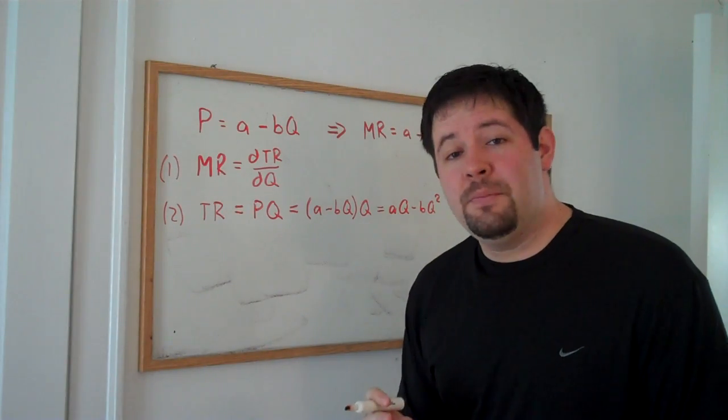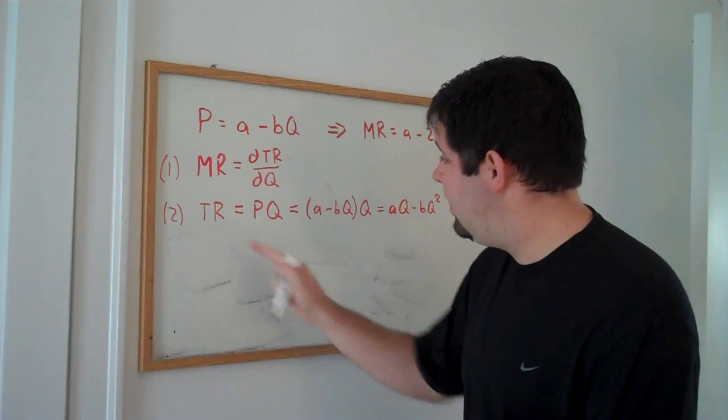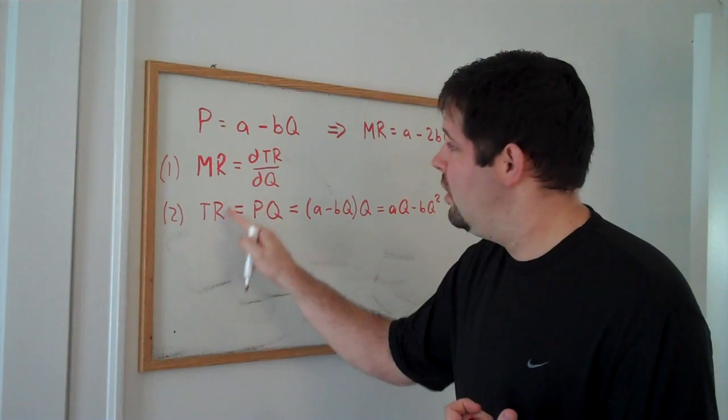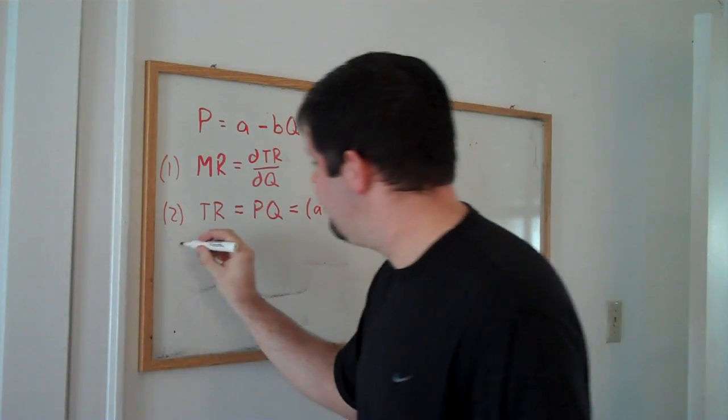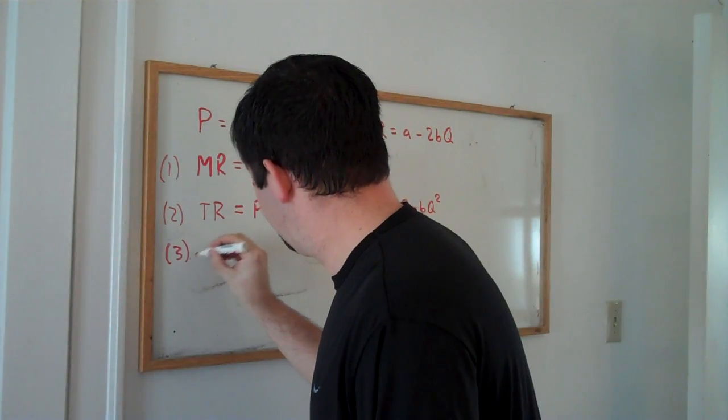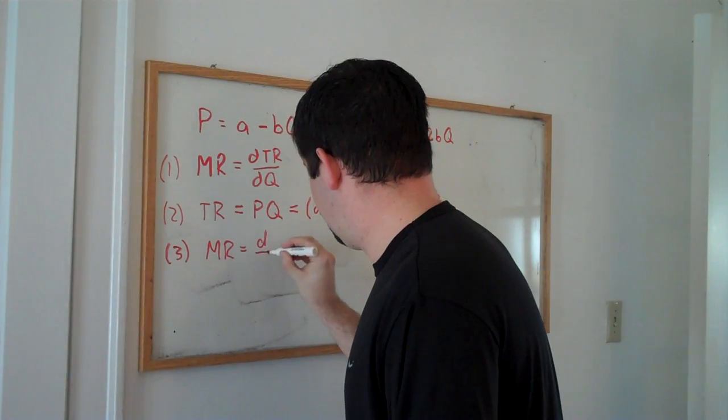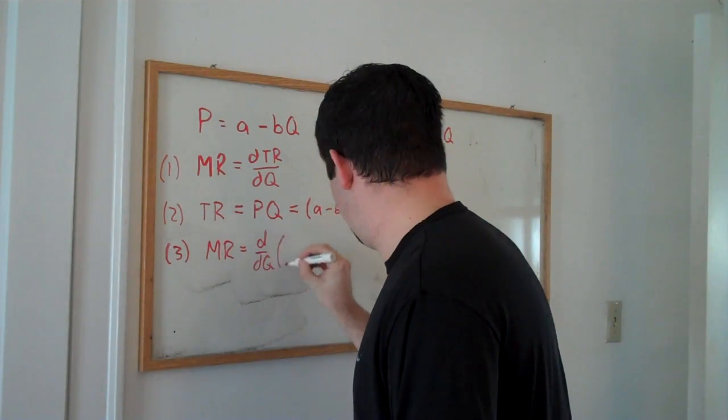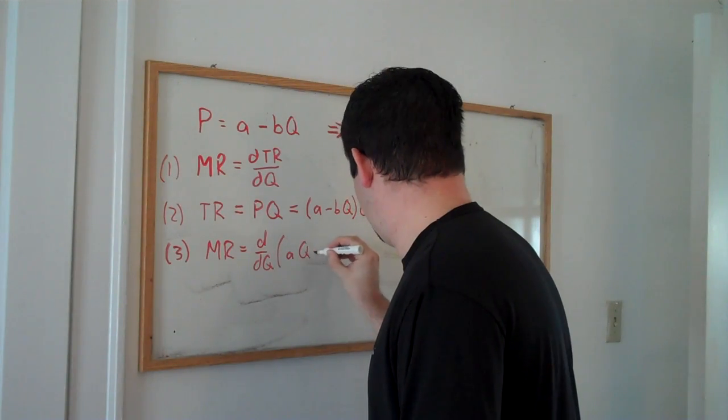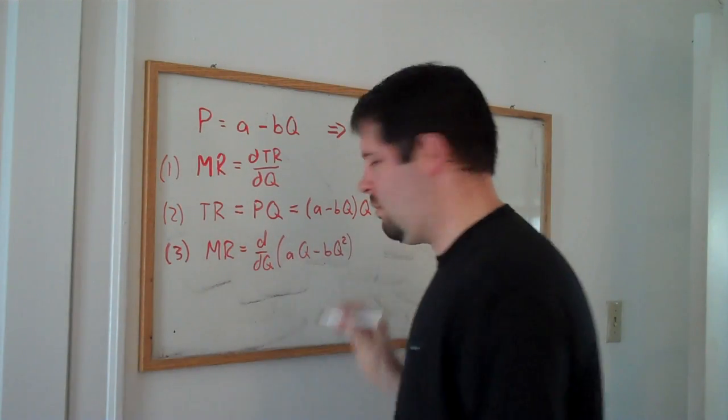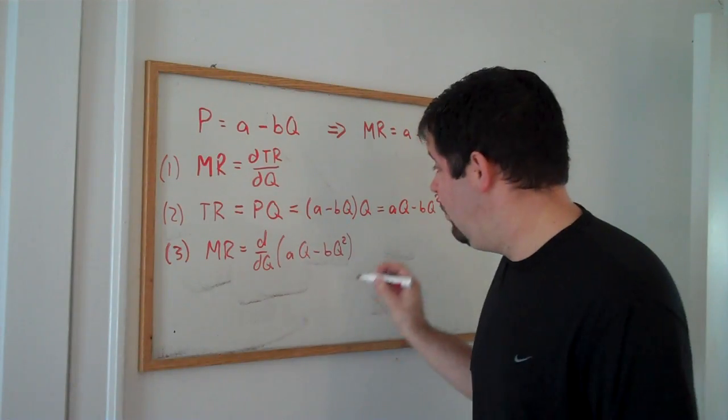Now, just use a simple rule of calculus, taking the derivative of total revenue to obtain marginal revenue. This is just the power rule.